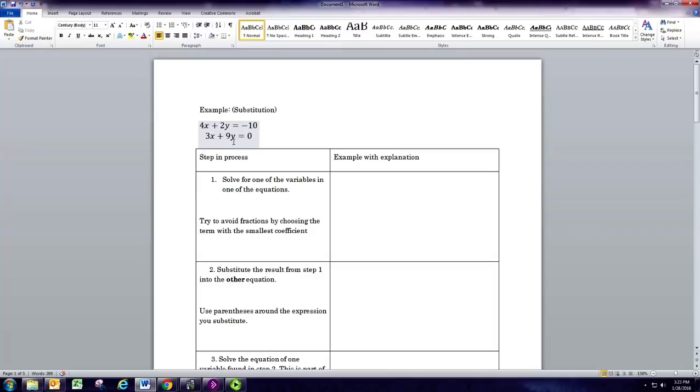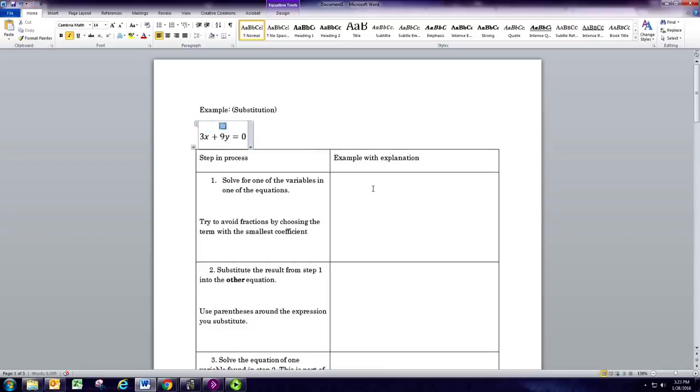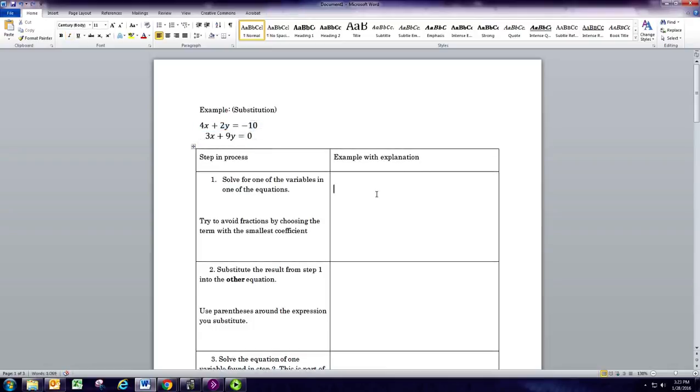The first step with the substitution method is to take either equation and solve for either variable. So there's no real wrong one to do here, but what you want to try to do is avoid fractions. You can see that if I were to solve for y here I'd be dividing by 2 and that would be okay. If I were to solve for x here I'd be dividing by 3 and that would also work. I'm gonna go ahead and take the first equation and I'm gonna solve for y there.